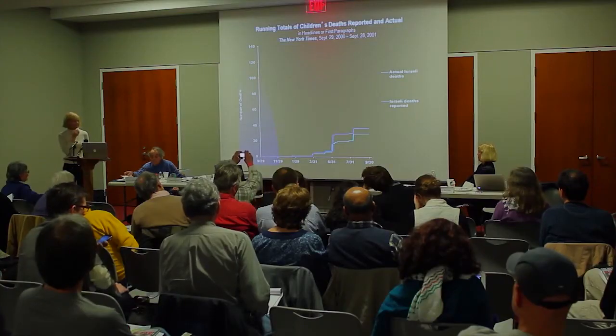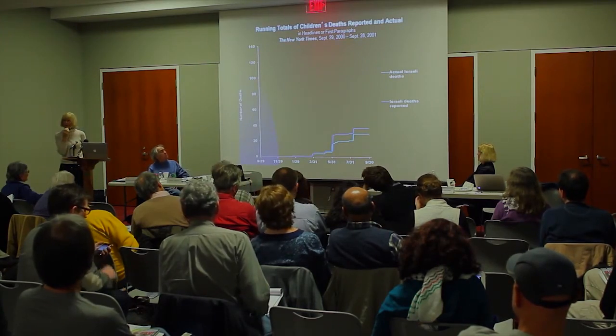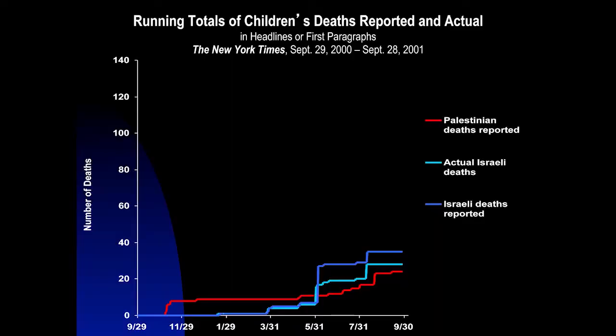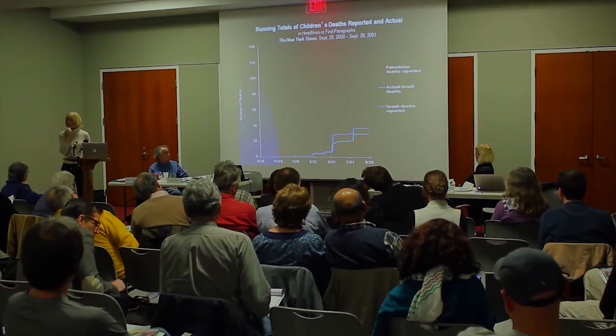Interestingly, it makes sense. Next, we'll see the New York Times reporting on Palestinian children killed that first year — this red line. As you can see, it's lower, but it's following the same curve. It's a very similar curve. That's the New York Times reporting on Palestinian children killed by Israelis.